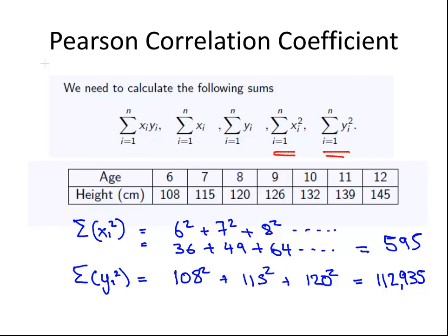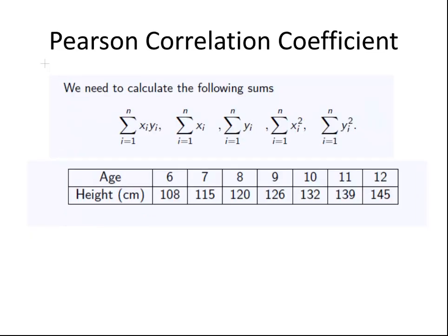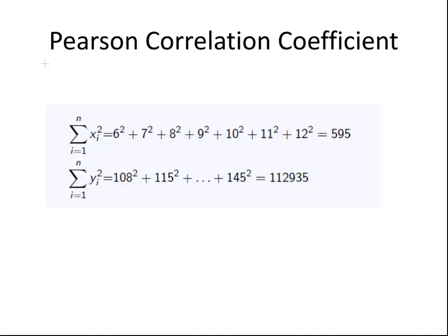Let's check all our answers. The sum of x: the sum of the casewise products of each corresponding value of x and y, we get 8136. The sum of the x values is 63. The sum of the y values, 885. The sum of the squares of the x values, 595. The sum of the squares of the y values, 112,935.